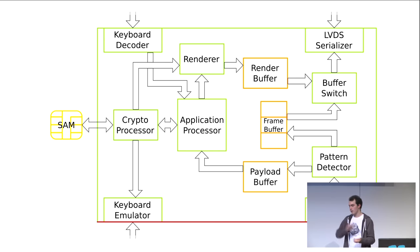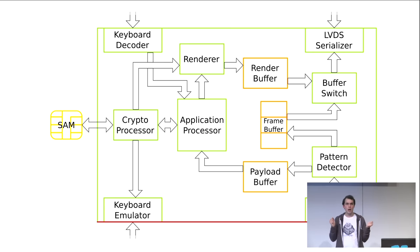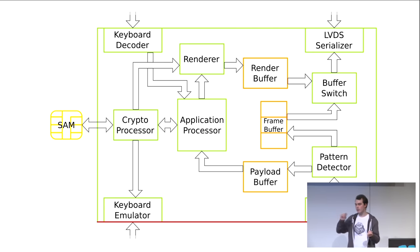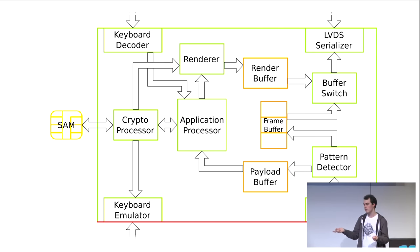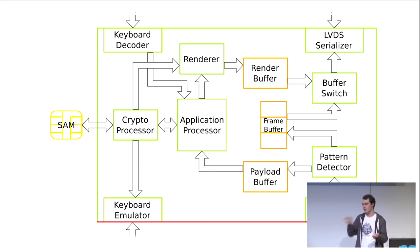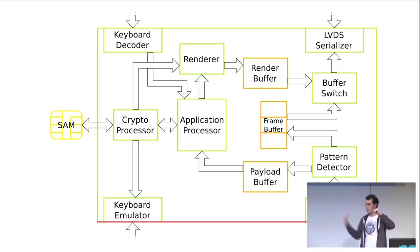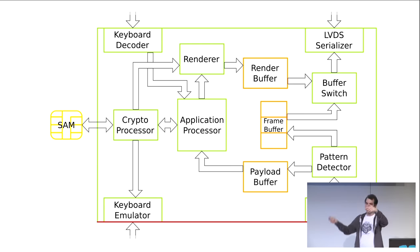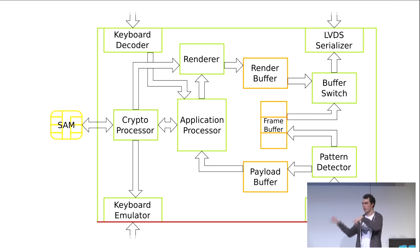Physically, the application processor in this scenario would never be in possession of the plaintext. So even if you compromise it through some means, you would not be able to access plaintext data there. The renderer would probably be another processor running something like FreeType, converting UTF-8 input into pixel data — which, as it turns out, is a really complex problem. This renderer outputs a bitmap into a render buffer, which is then dynamically switched into the in-flight LVDS or embedded DisplayPort signal by the buffer switch.